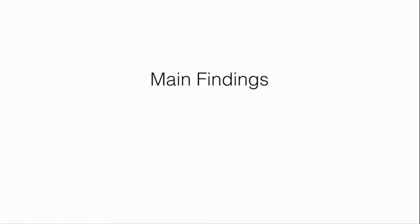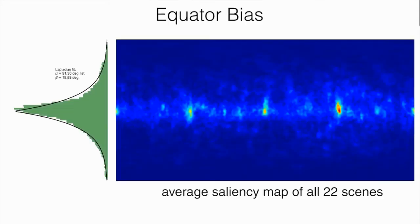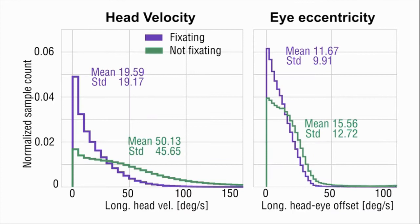First, we find that we can apply existing saliency predictors to VR with simple modifications. One important insight is that users fixate on the equator more than they fixate on extreme angles. We can quantify this equator bias for different viewing angles using our recorded data. We improve the accuracy of existing saliency predictors by weighting the predicted saliency map with our derived equator bias. Second, we find that the user's head and gaze movement are coupled in VR.